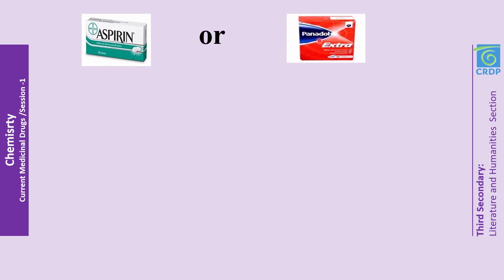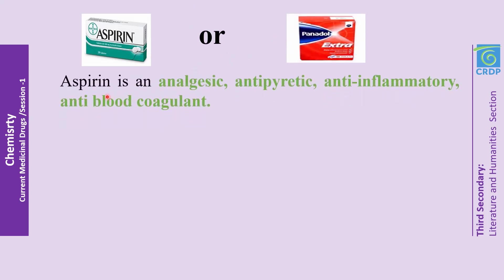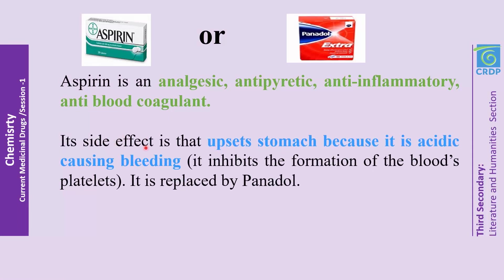What should we choose — aspirin or Panadol? Aspirin is an analgesic, antipyretic, anti-inflammatory, and anti-blood coagulant. Its side effect is that it upsets the stomach because it is acidic, causes bleeding, and inhibits the formation of blood platelets. Therefore, it is sometimes replaced by Panadol.